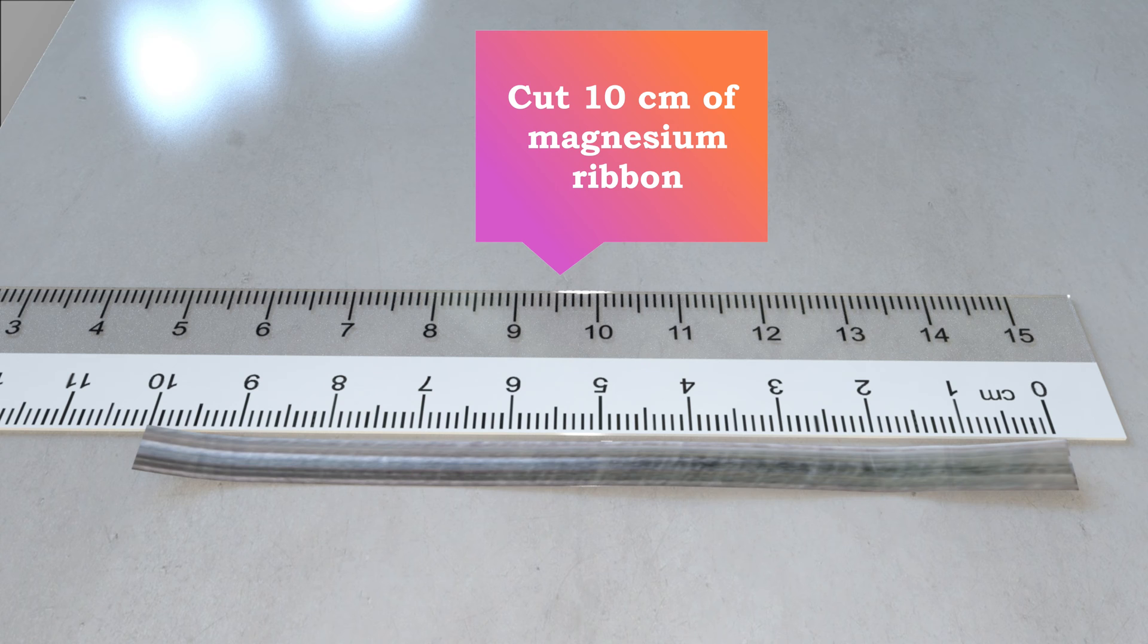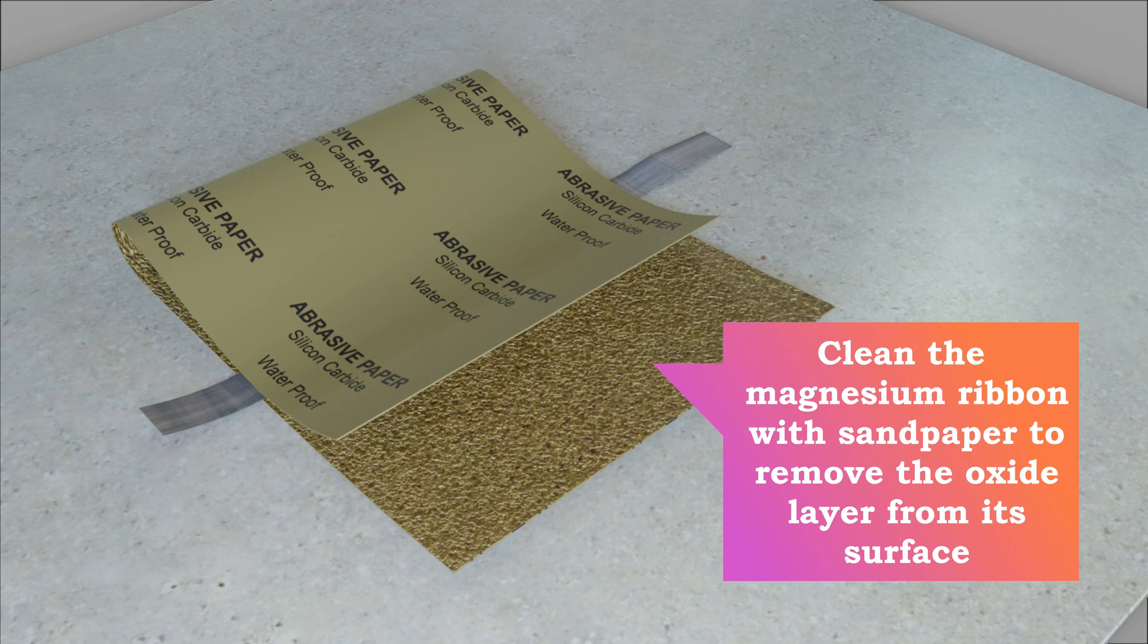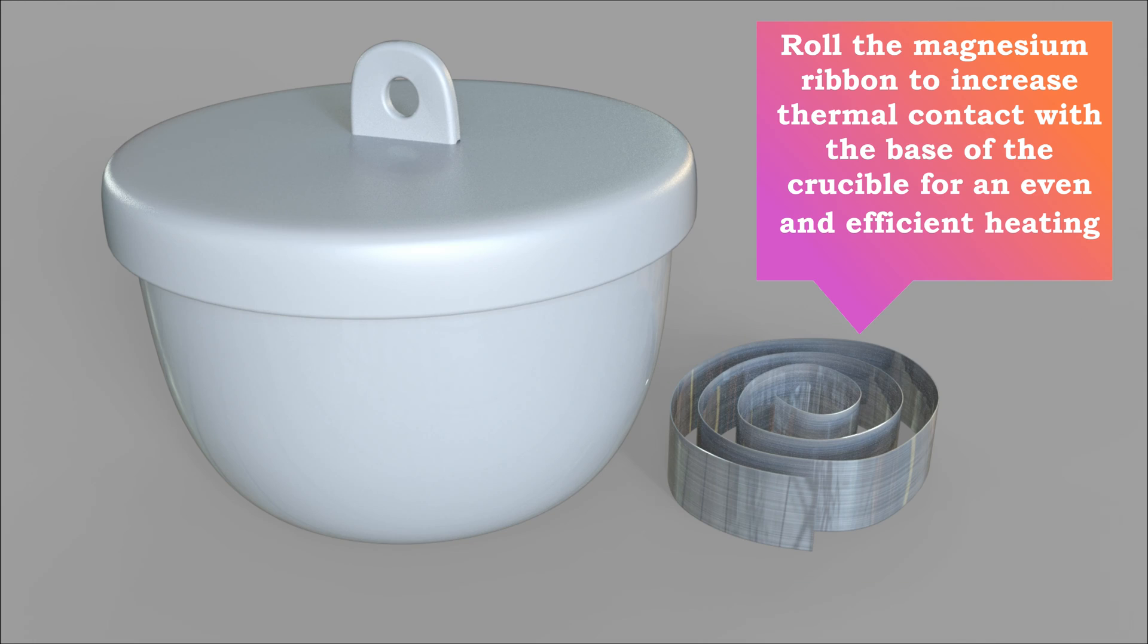Cut 10 centimeters of magnesium ribbon. Clean the magnesium ribbon with sandpaper to remove the oxide layer from its surface. Roll the magnesium ribbon to increase thermal contact with the base of the crucible for an even and efficient heating.